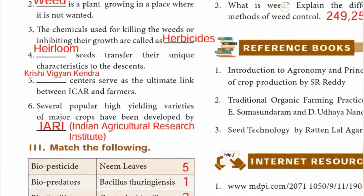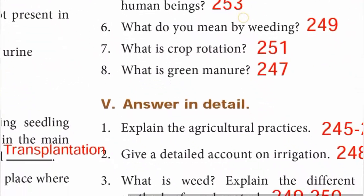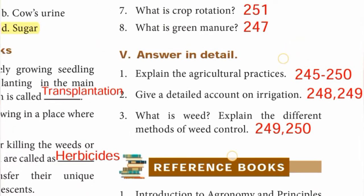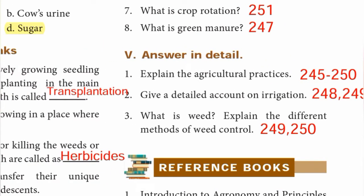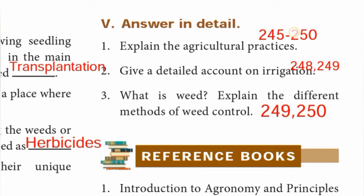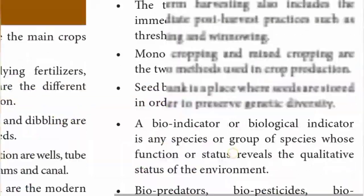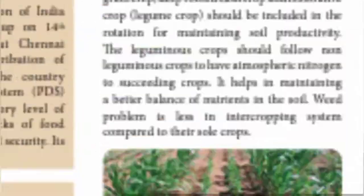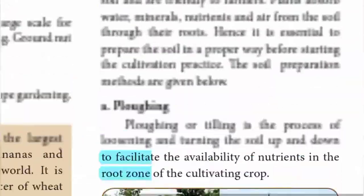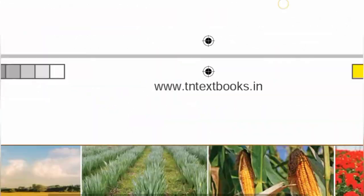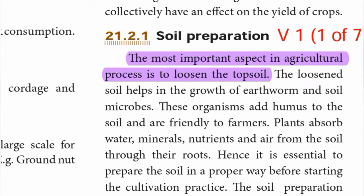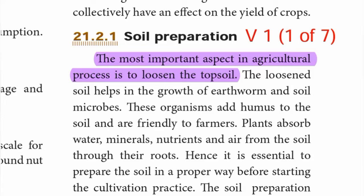Page number 258, Roman number 5 — answer in detail. First one: explain the agricultural practices. Page 245 to 250 has the relevant points. Soil preparation is the heading. The most important aspect in the agricultural process is to loosen the top soil — this is the first point. Roman number five, detail first question has seven points.